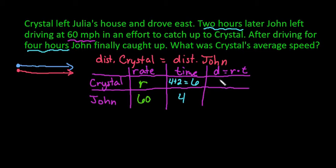We would then set up our distance. So Crystal traveled a distance of 6R and John traveled a distance of 60 times 4 or 240 miles.